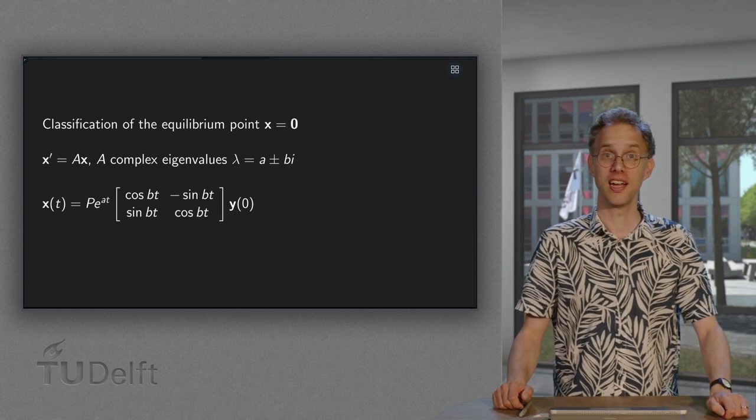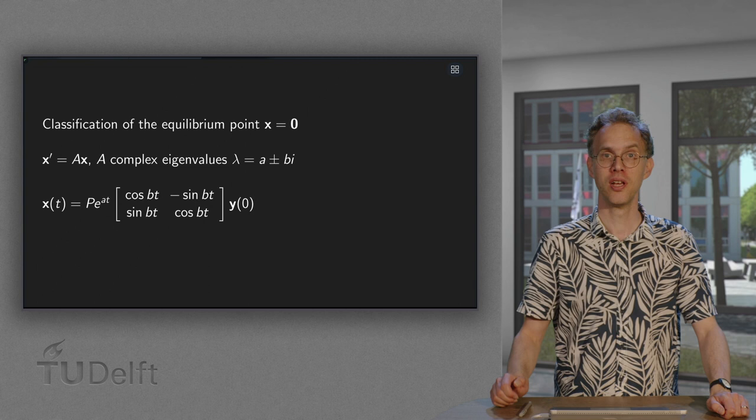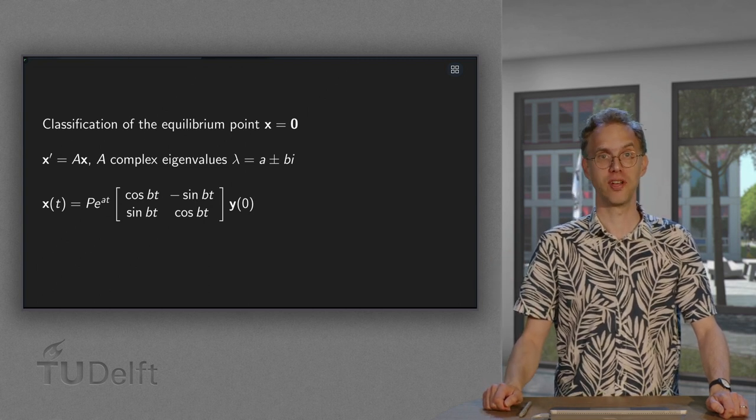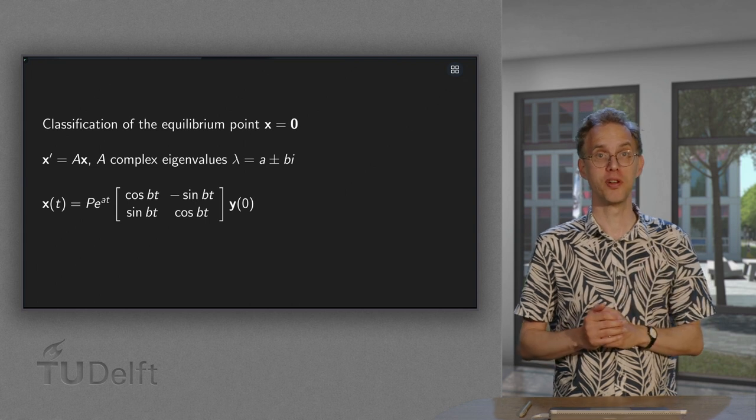Just as in the case where A had real eigenvalues, we now wonder what happens if A has complex eigenvalues to the equilibrium point in the origin.